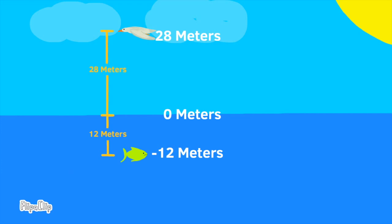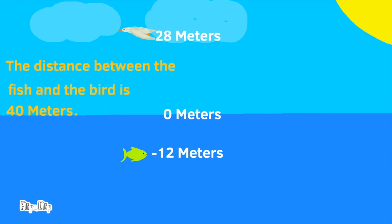The elevation of the bird is 28 meters. The distance between sea level and the bird is 28 meters. So what's the distance between the fish and the bird? To find the distance between the fish and the bird, we would add the absolute values of their elevations, 28 and 12. 28 plus 12 equals 40. The total distance between the fish's elevation and the bird's elevation is 40 meters.